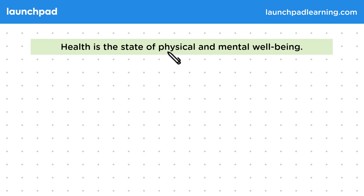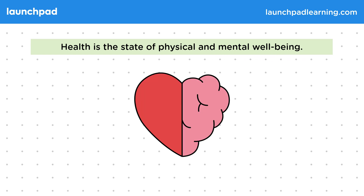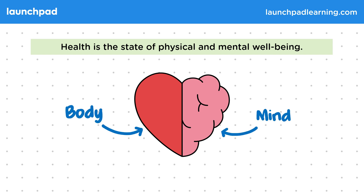Health is the state of physical and mental well-being. This image on your screen represents health and is formed of half a heart and half a brain, because health involves both the body and also the mind.